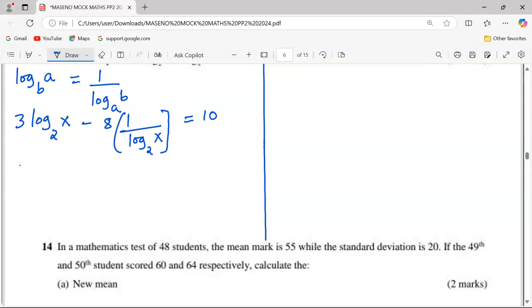Now that log₂(x) is appearing twice, we can let it be a certain unknown. Let log₂(x) be something, say t for example. So 3t - 8 multiplied by the reciprocal of t equals 10. When we multiply through by t...